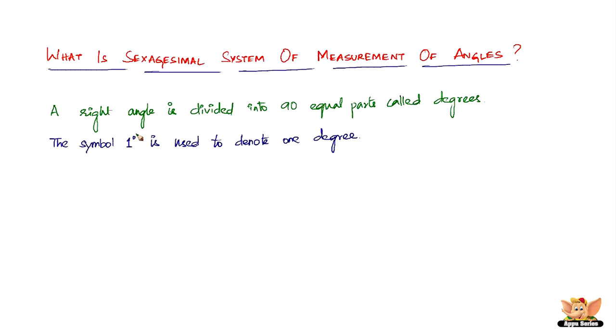As a result, one degree is one-ninetieth part of a right angle, because a right angle is divided into 90 equal parts and each part is called one degree.